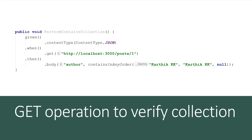Next is the GET operation to verify collections. APIs often return collections of results, and we may need to verify all of them at once. For that, you can use `containsInAnyOrder()` — which, as the name suggests, verifies all items regardless of their order. You can tag by a field like 'author' and verify all values. There are many matcher method combinations available, such as `contains()`, `containsInOrder()`, and `hasItem()`.